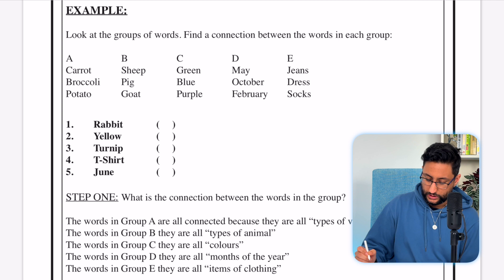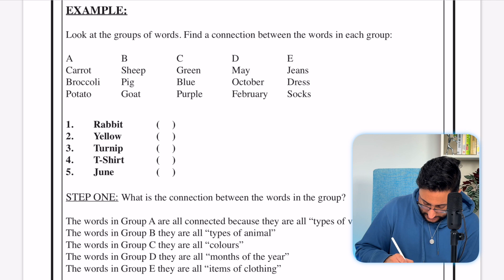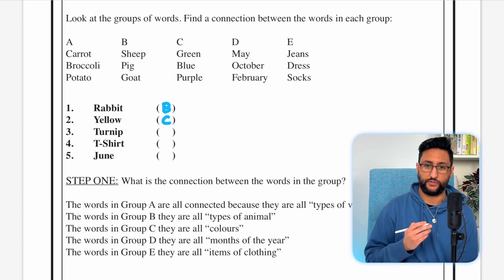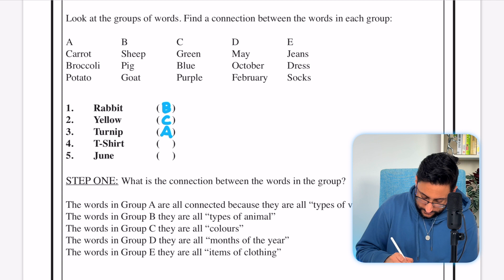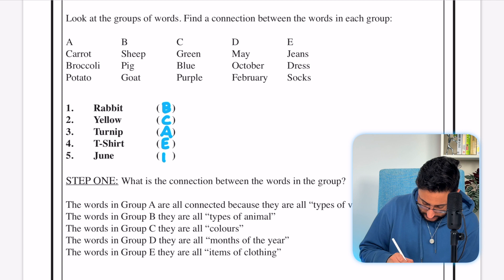Now we've got five quick examples here to go through. It should be fairly straightforward. Rabbit — we're going to say that belongs to group B. Yellow is a colour, so that's going to belong to group C. Turnip is a type of vegetable, so that'll be group A. T-shirt is E, an item of clothing. And June is obviously a month, so that's going to belong to group D.